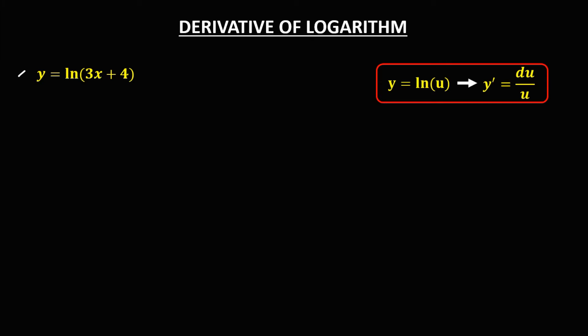Using the formula to find the derivative of a natural log: y equals ln u, the derivative is du over u. For this given, u is 3x plus 4.